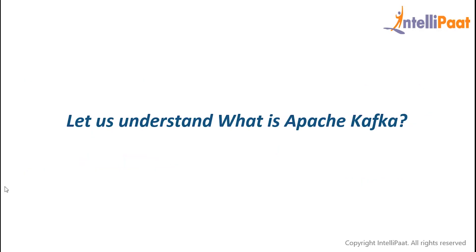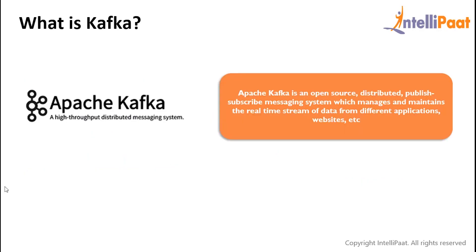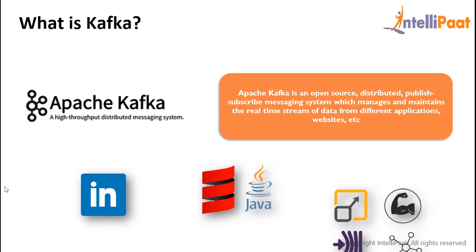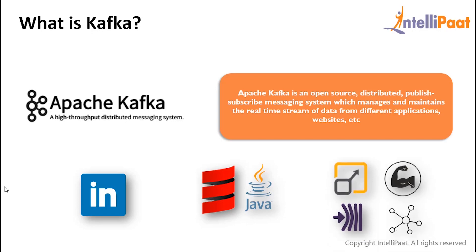Now let's understand Apache Kafka in detail. Apache Kafka is an open source distributed publish-subscribe messaging system which manages and maintains the real-time stream of data from different applications, websites and so on. Apache Kafka originated at LinkedIn and later became an open source Apache project in 2011. Then in 2012 it became a first-class Apache project. Kafka is written in Scala and Java and it is fast, scalable, durable, fault-tolerant and distributed by design.